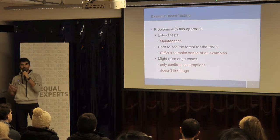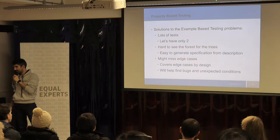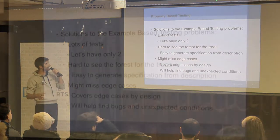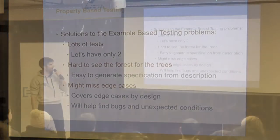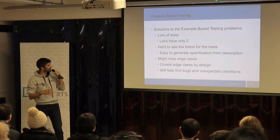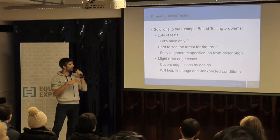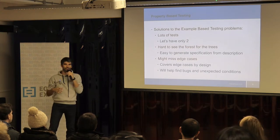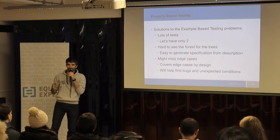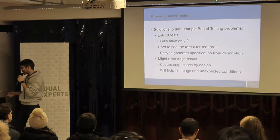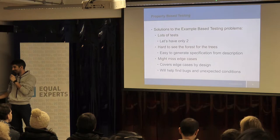Property-based testing can help us out. Instead of having lots of tests, let's try and have only two tests. Instead of having all these tests that are difficult to find the specification, let's try and generate a specification from the description we saw. And also, let's try and get edge cases covered and generate numbers that will hopefully find bugs that we didn't think about. That is the goal. Let's see how this actually works.